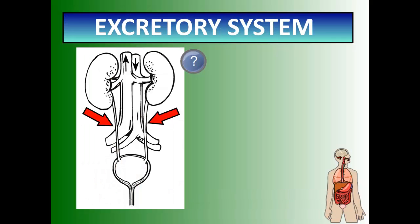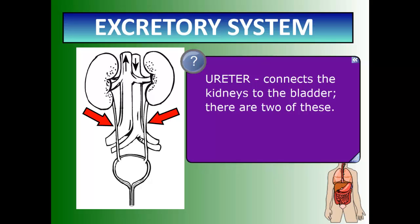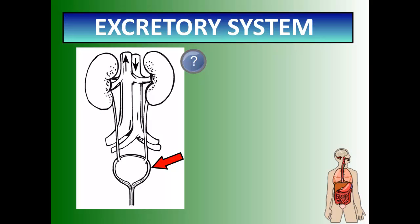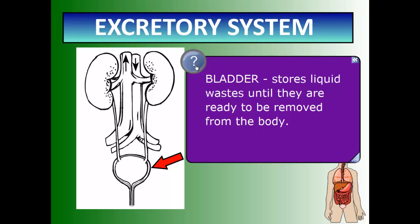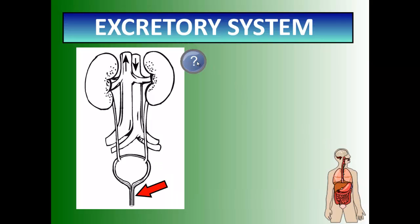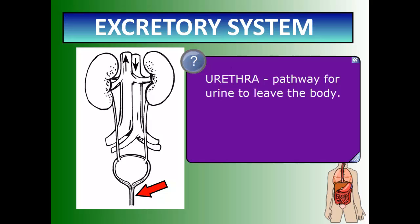That tube which takes waste out of the kidney is called a ureter. It connects the kidneys to the bladder, and you have two of these because you have two kidneys. The structure at the bottom connected to the ureters is the bladder, which stores liquid waste until it is ready to be removed from the body. Bladders can reportedly store up to four liters of fluid at any one time — that's a lot of liquid waste. The final tube connected to the bladder is called the urethra, which is the pathway for urine to leave the body through a single tube.